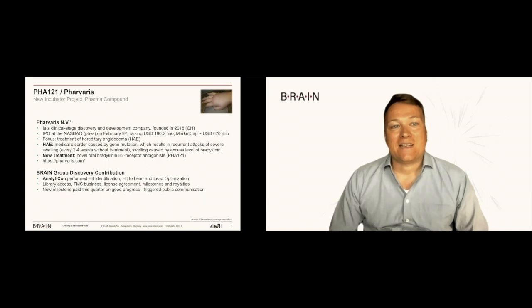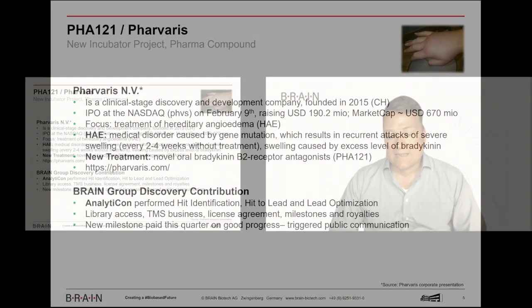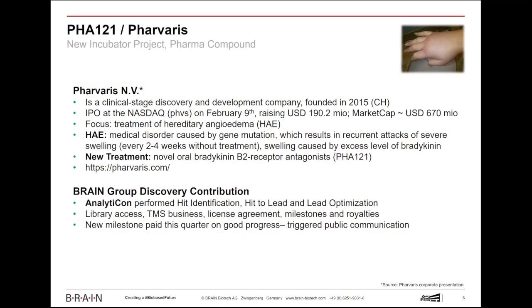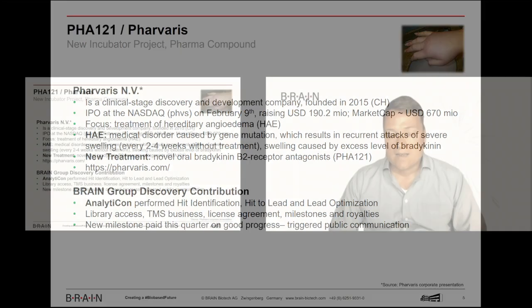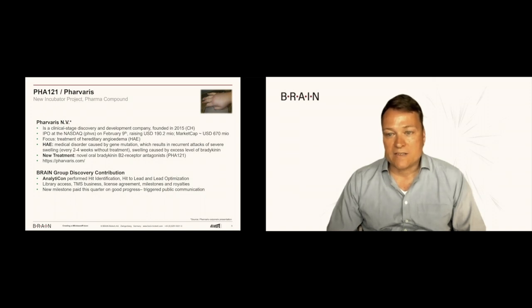So first of all, let me touch upon Favaris, or PHA-121, as the compound is called. That is a rare disease which is caused by a medical disorder by gene mutation, and it results in recurrent attacks of severe swelling in patients, very painful and potentially lethal. What Favaris is developing here is basically an oral treatment, because right now the standard treatment is injection, so there has to be hospitalization for patients. In the new treatment area, they're trying to find an oral receptor antagonist to prevent these swellings in patients.